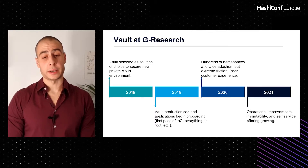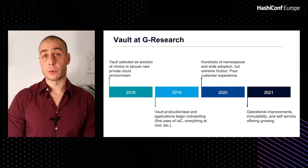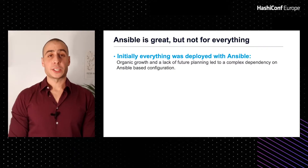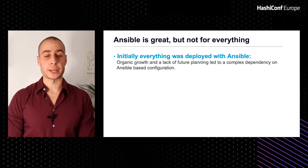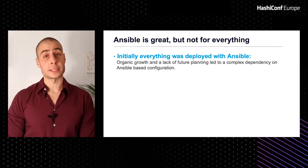This takes us to where we are today, nearing the completion of an overhaul of how Vault is used at GR. We're finally at a stage where we're seeing the benefits of our efforts. Looking back at 2018 and 2019, there were some initial oversights in how Vault was being managed at GR, and the main culprit was our dependency on Ansible.